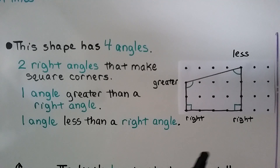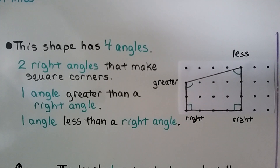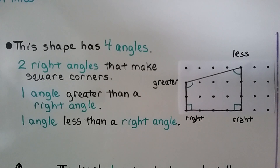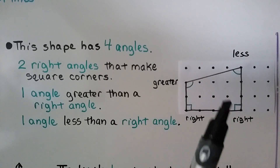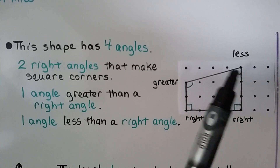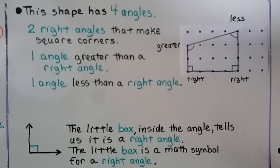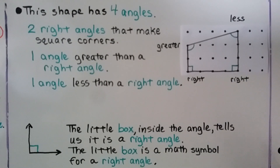This shape has four angles. Let's count them: one, two, three, four. Two right angles make square corners down here. One angle is greater than a right angle — it's open more than a square corner. And one angle is less than a right angle — it's more closed than a square corner. The little box inside an angle tells us it is a right angle; it's a math symbol for right angle.